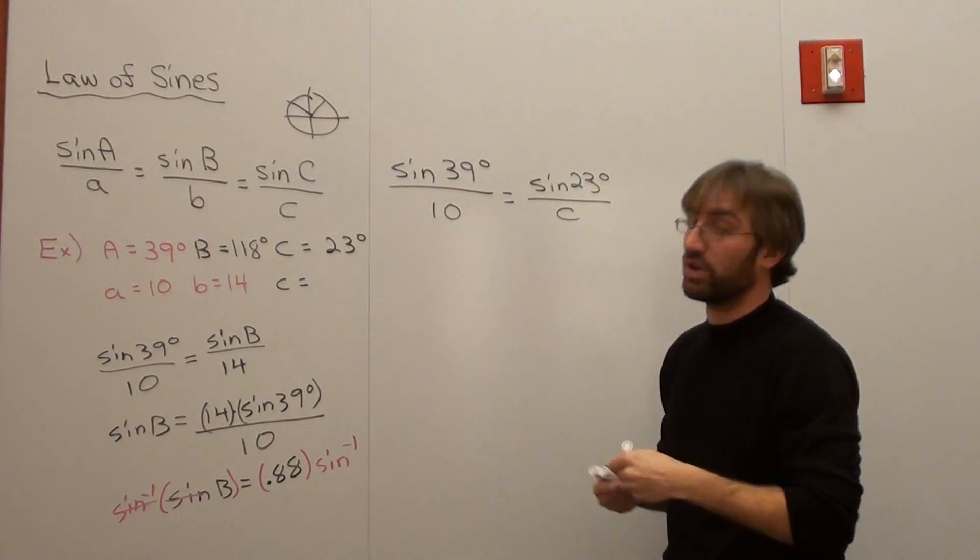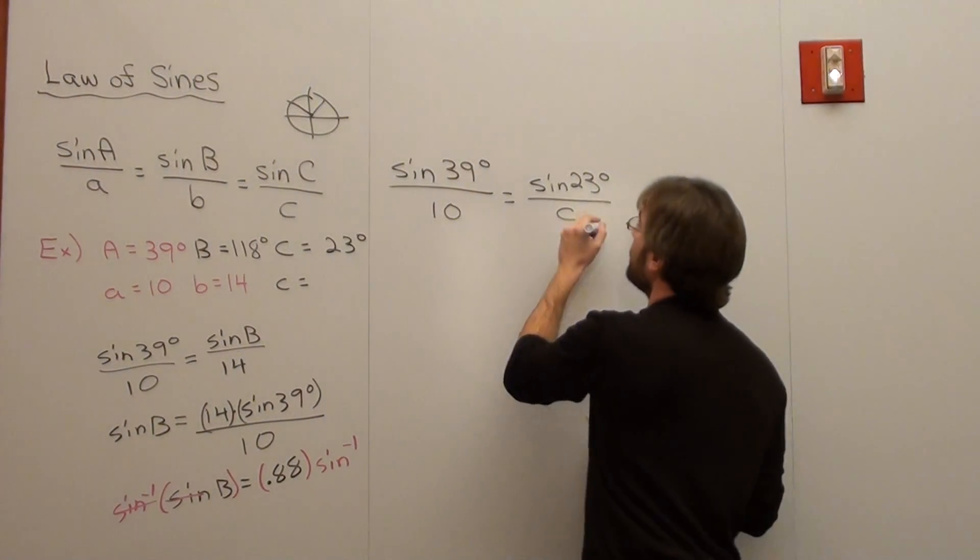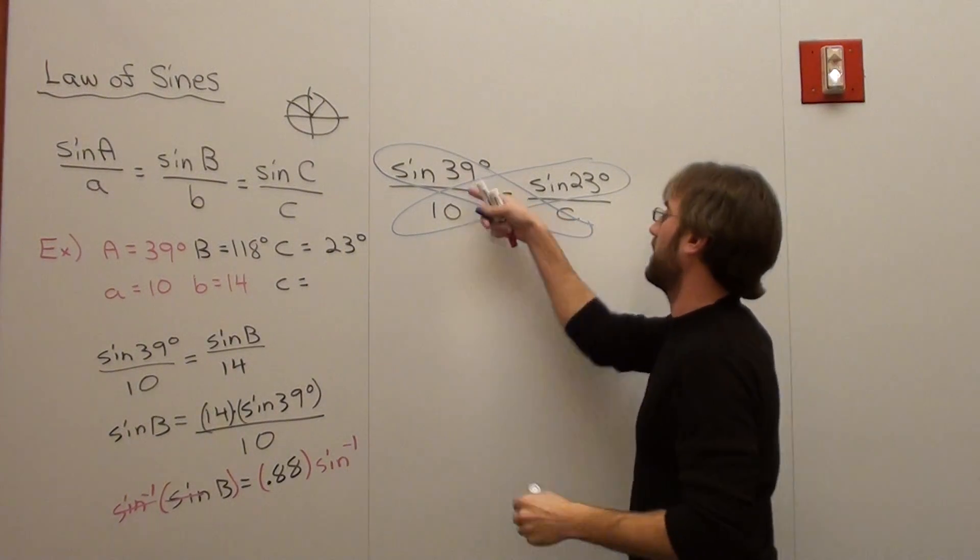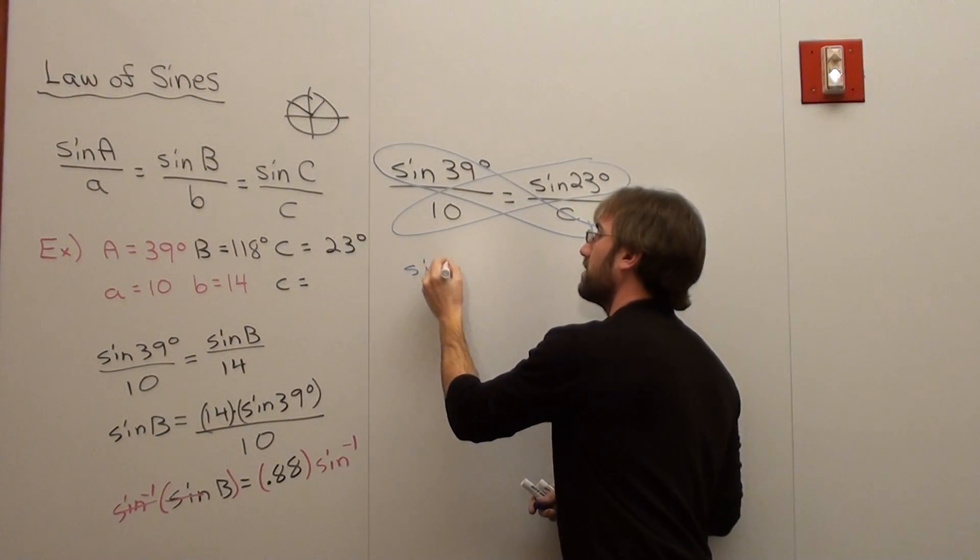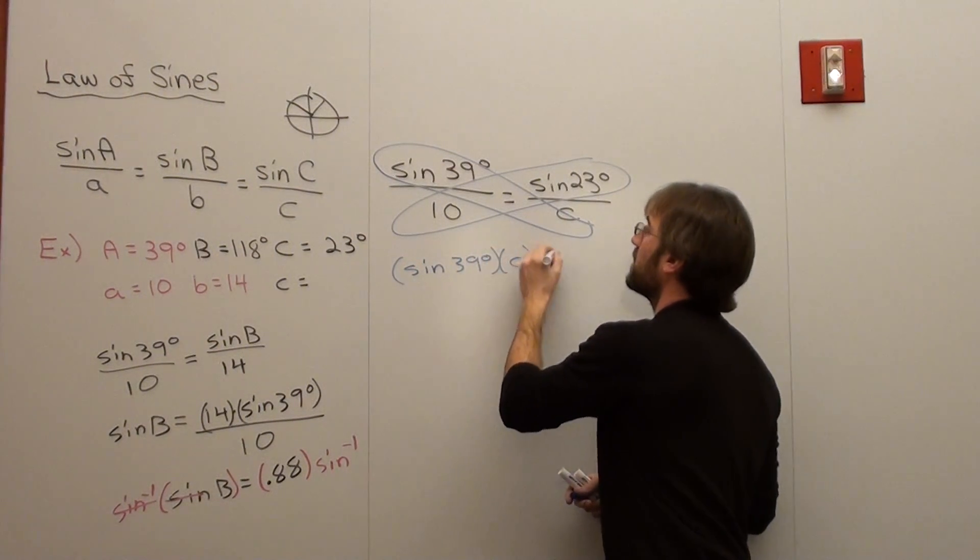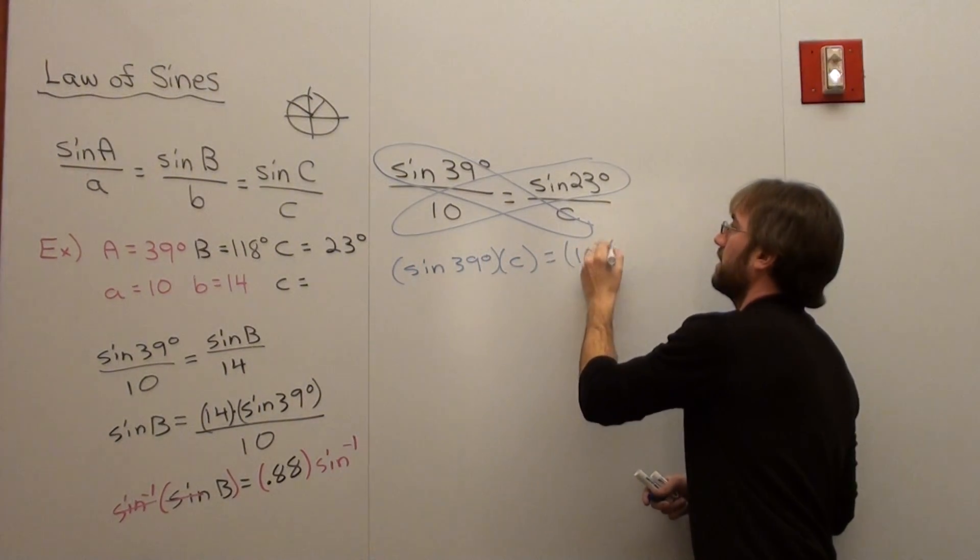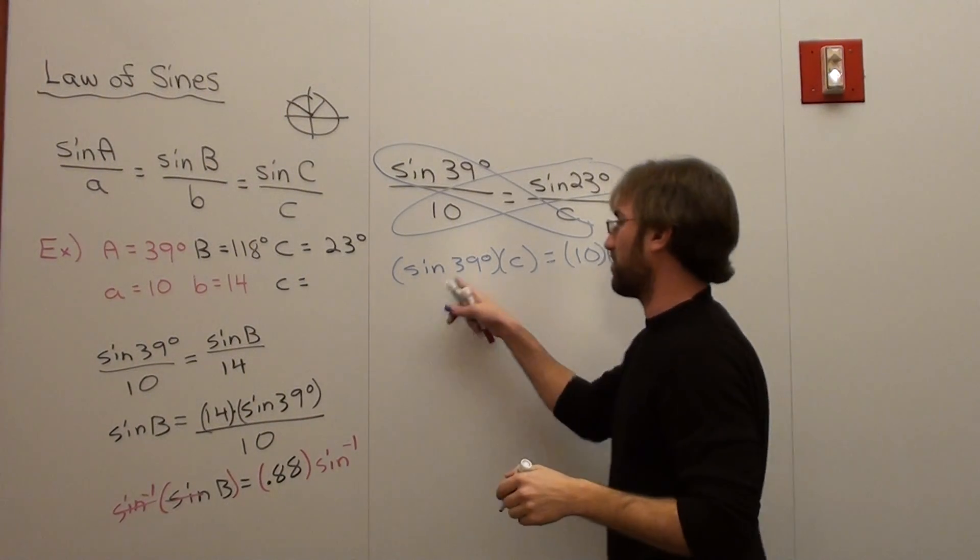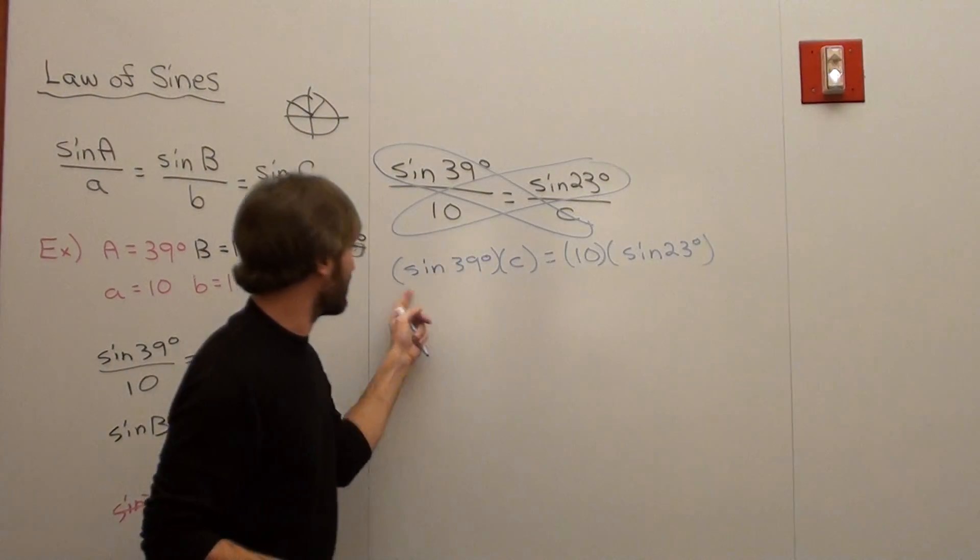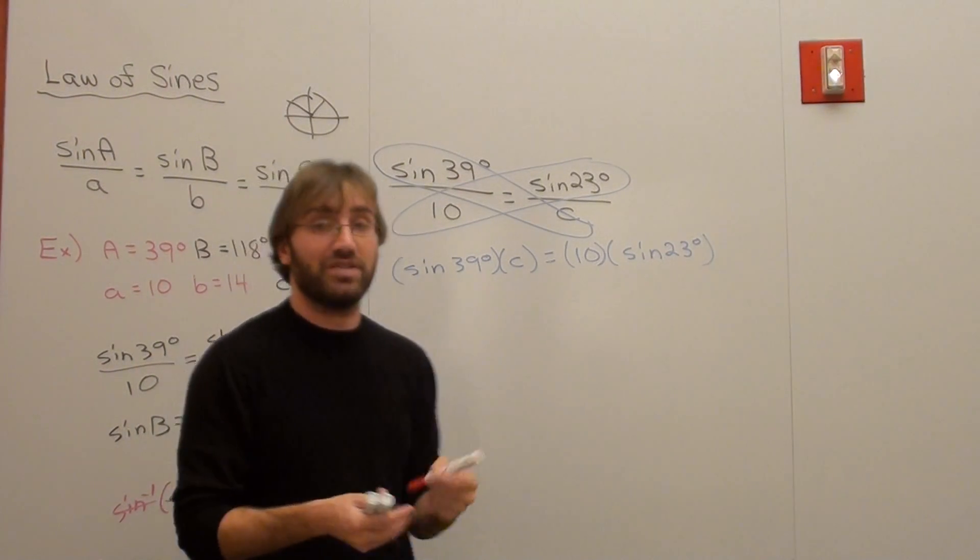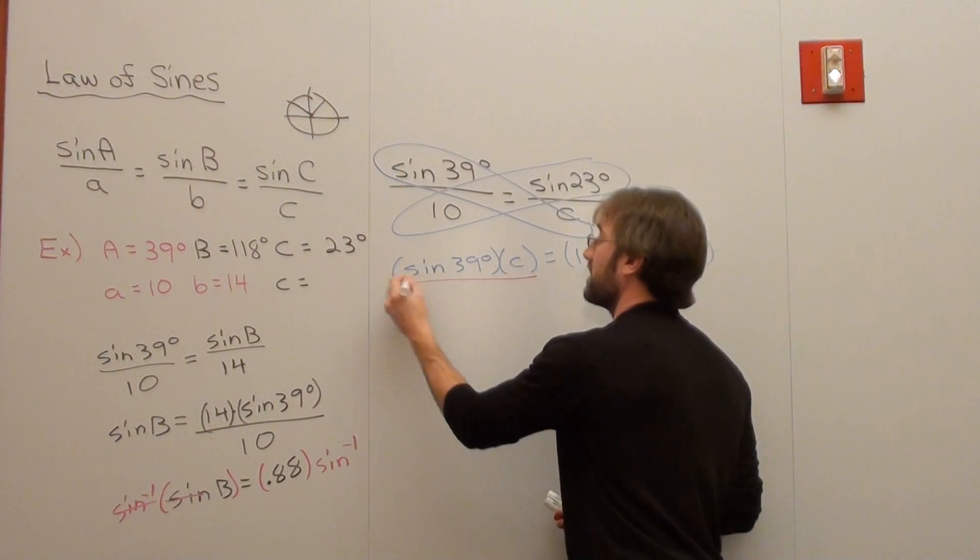What I'm going to do is cross multiply, and what I get is sine of 39 degrees times C equals 10 times sine of 23 degrees. It doesn't really matter if C or sine of 39 degrees goes first. I want to get C by itself, so I'm going to divide by sine of 39 on both sides.